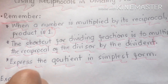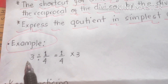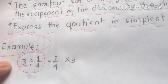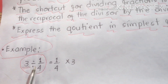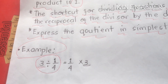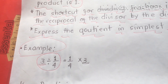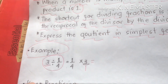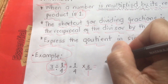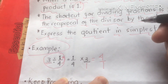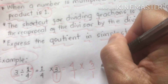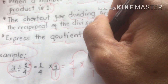For our example, we have three divided by one-fourth. Remember, three is a whole number, so we're going to find the reciprocal of three. We write one-fourth times three-over-one. To solve it, we reverse: one-fourth becomes four-over-one. So now we have four-over-one times three-over-one.